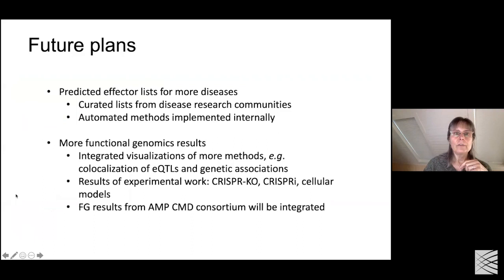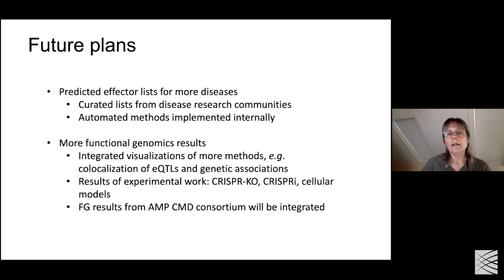Let me give a preview of our future plans. Effector gene lists are very important and one of our highest priorities - we want to predict effectors for more diseases. We're interested in both getting curated lists from disease research communities and implementing automated methods internally so we can run and update them regularly. We're currently working with Krishna Aragam and Adam Butterworth from the Cardiogram Consortium, who have a method to prioritize cardiovascular risk genes, and we're looking to present their list of effectors as soon as they're ready.